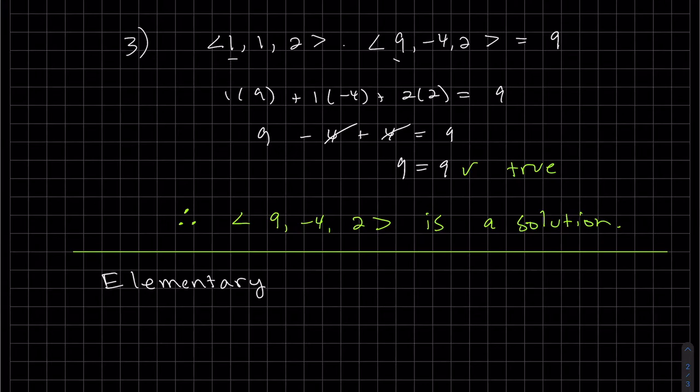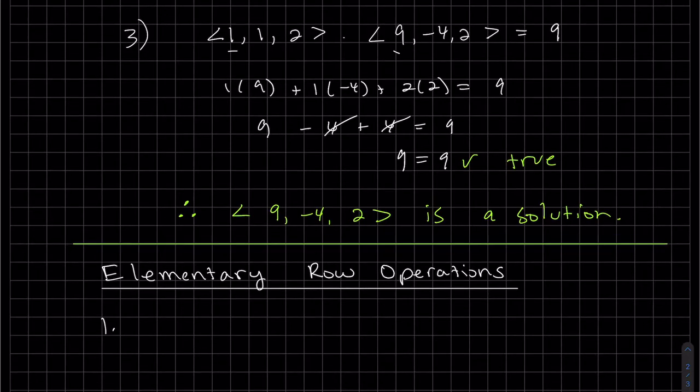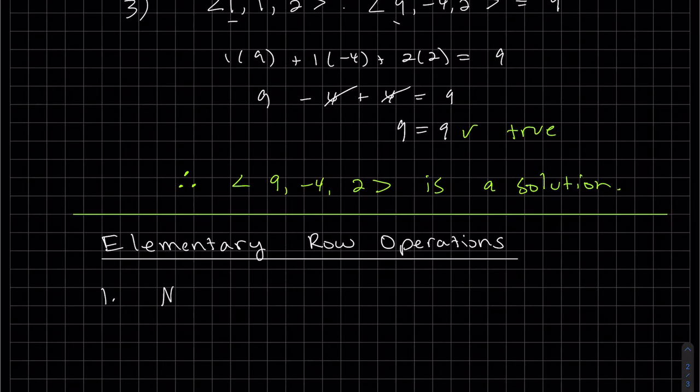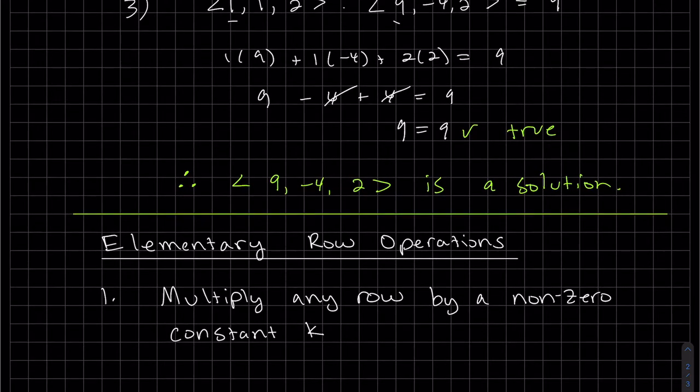To do that, I'm going to explain what elementary row operations are. The first elementary row operation is we can multiply any row by a non-zero constant K. We write that as KRi, where i will be the first row, second row, third row, whatever, and that becomes the new Ri.